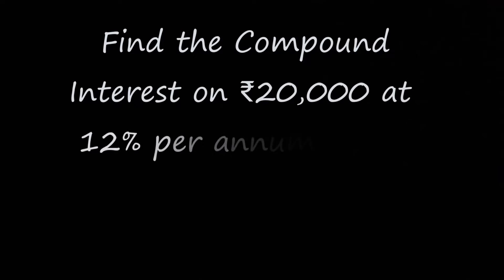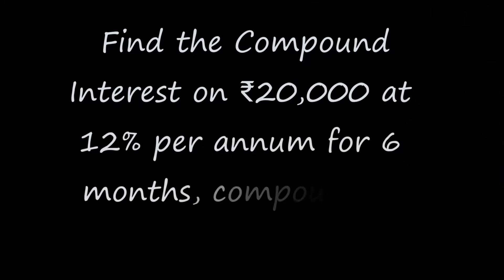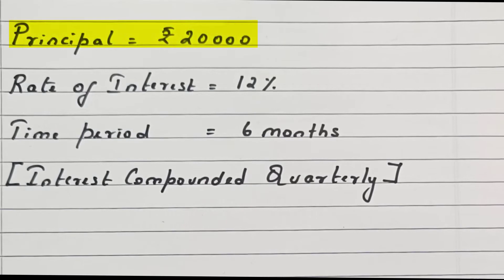Find the compound interest on ₹20,000 at 12% per annum for 6 months, compounded quarterly. Here, principal is equal to ₹20,000, rate of interest is equal to 12%, time period is equal to 6 months.